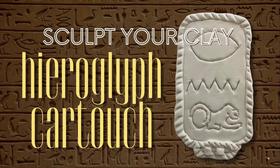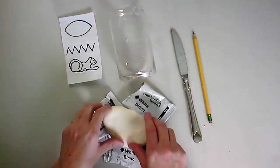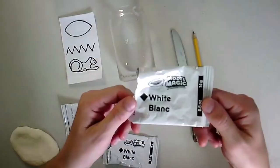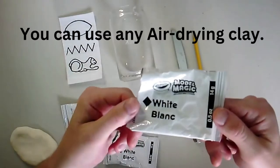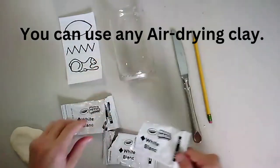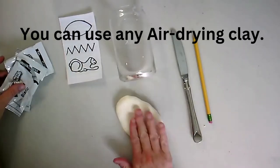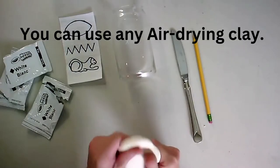Now that we have our initials written out in hieroglyphs, it's time to sculpt our clay to make our cartouche. I have three packages of this Crayola Model Magic, this regular white clay.